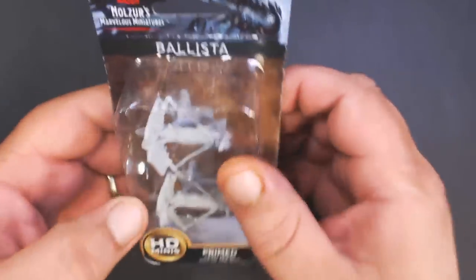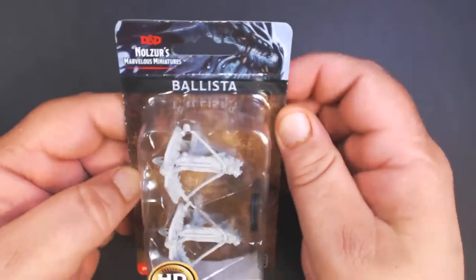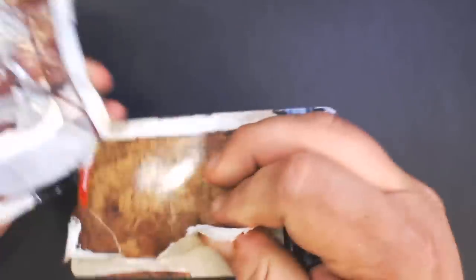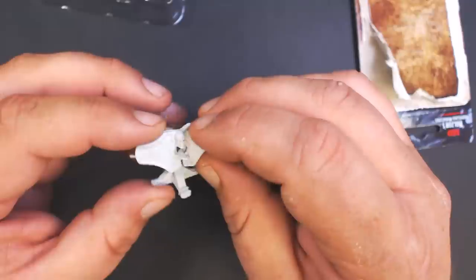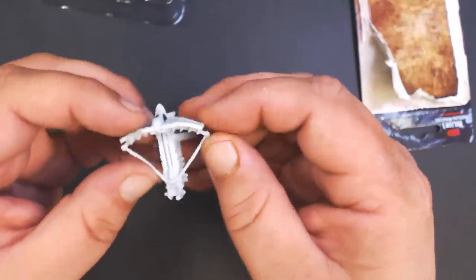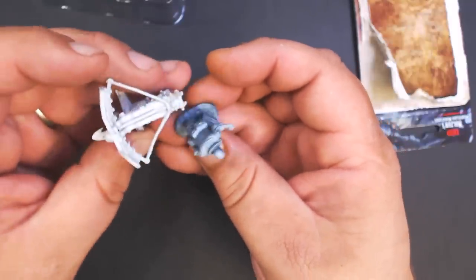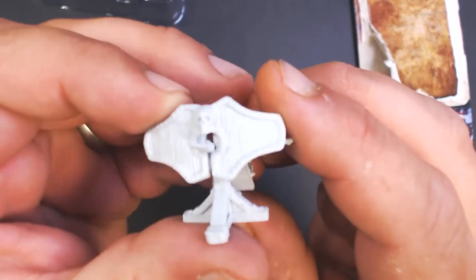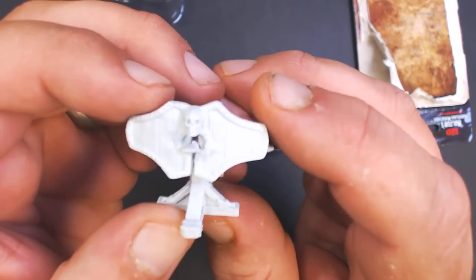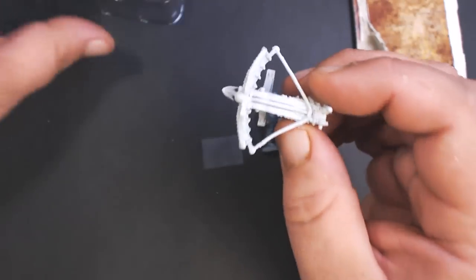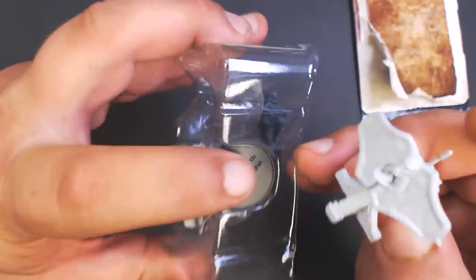We'll start with the Nolzer's Marvelous Miniatures line—we have a couple new ballista. Check them out, got a cool little skull on the front there, big arrow, pretty standard design. Here's a human merchant WizKids figure to show the scale. You can see nice wood grain detail in there and the metal banding.